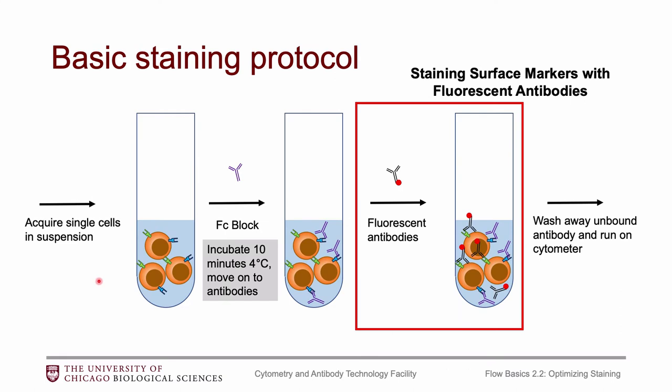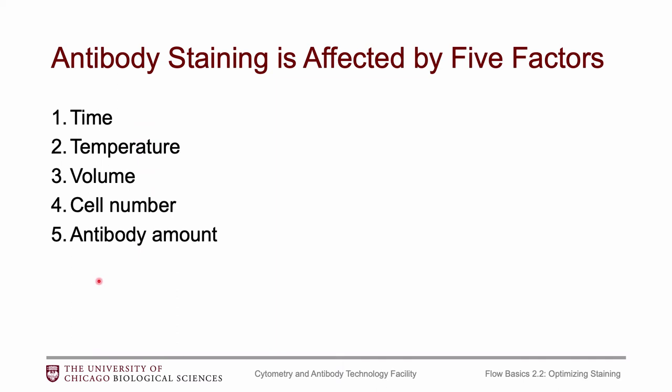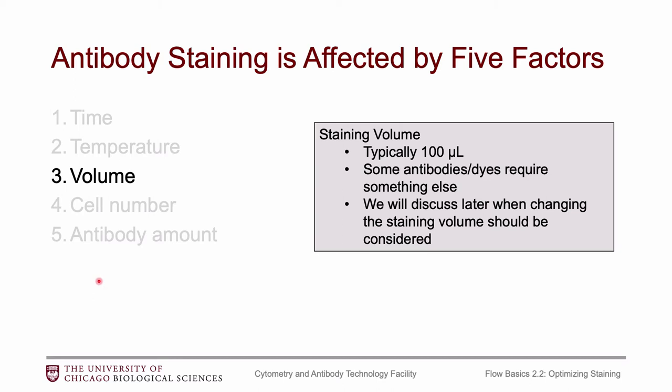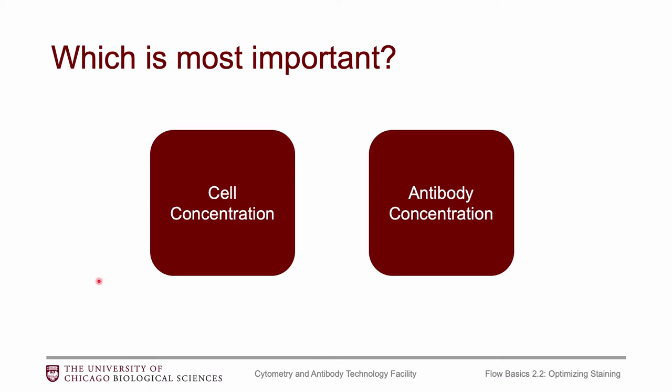For the rest of this talk, I want to focus on fluorescent antibodies and staining surface markers. We talked about five different factors in the first video: time, temperature, volume, cell number, and antibody amount. For time and temperature, just pick one and optimize based on that — I usually go with 30 minutes at four degrees. For volume, I always do 100 microliters, but I'll talk about a scenario later where you might need to change that. Really I want to get to cell concentration and antibody concentration, because these two are the hardest to figure out and require more thought than the other three.